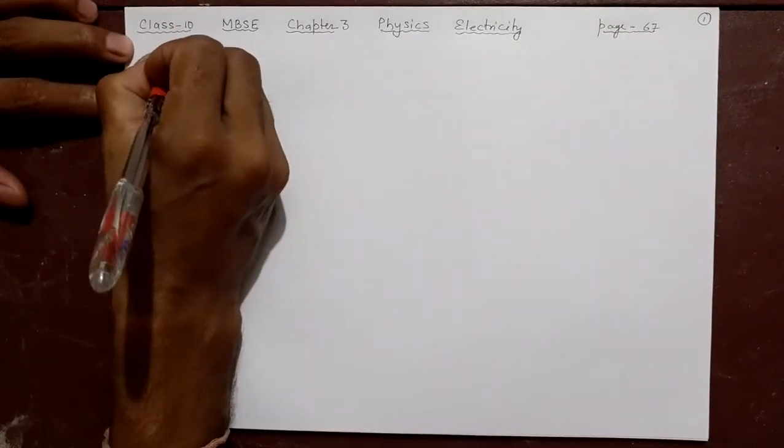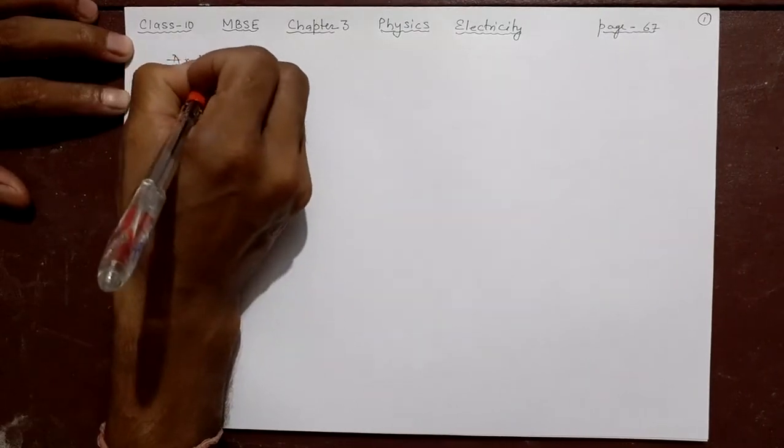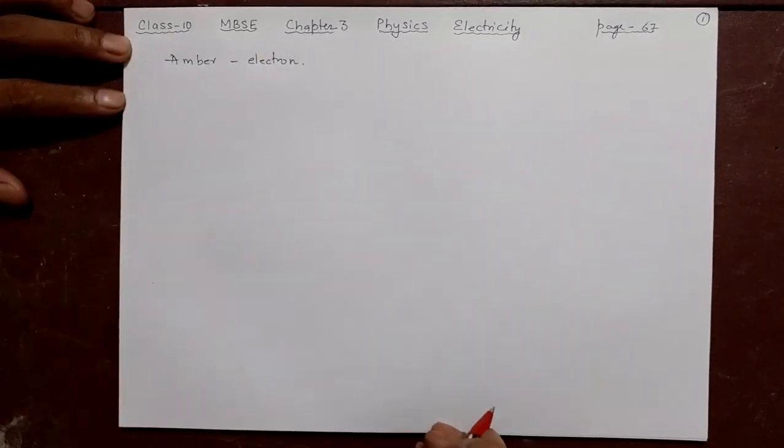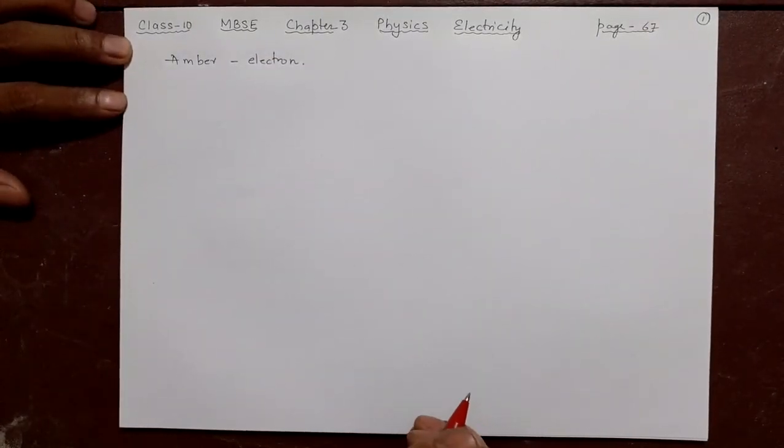Welcome to the SD Online Classes. Today we are doing Class 10 of MBSC Chapter 3 Physics. The name of the chapter is Electricity — in your textbook it will be page number 67. The term electricity is derived from the word 'amber.' Amber means electron.